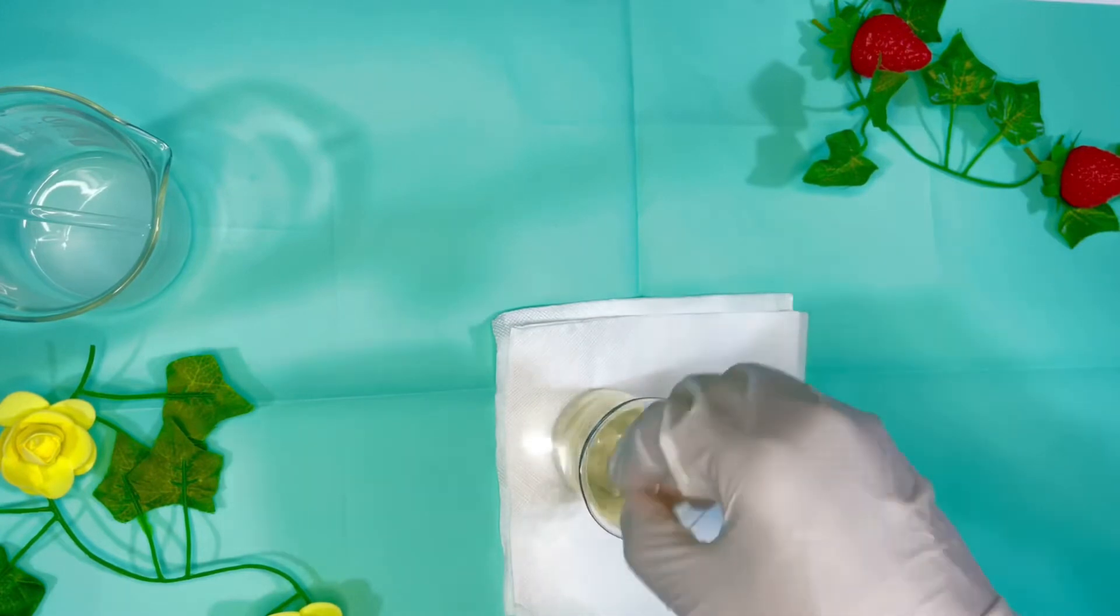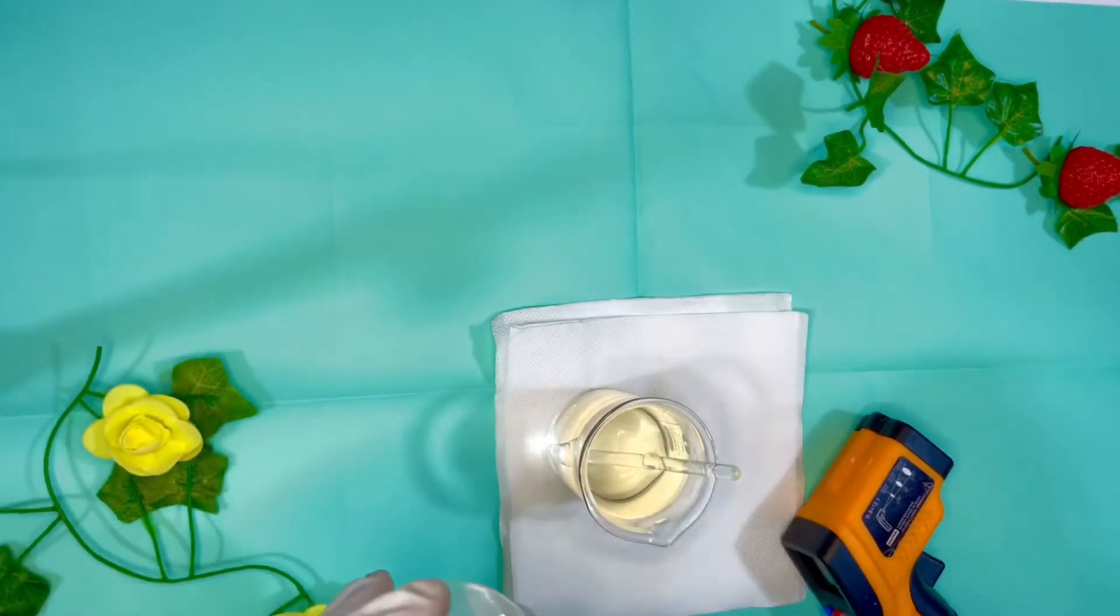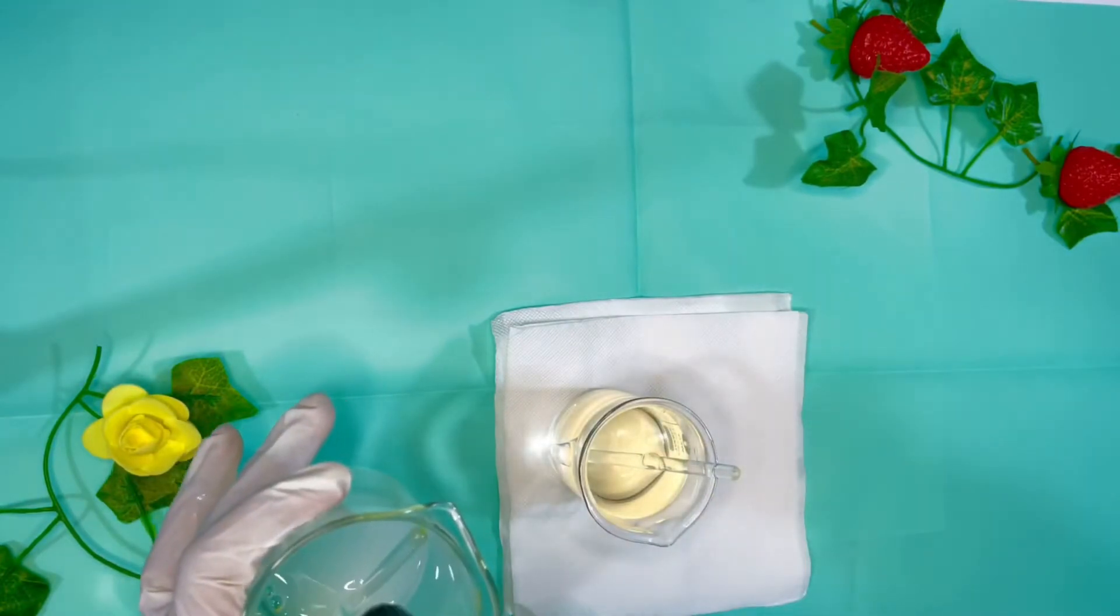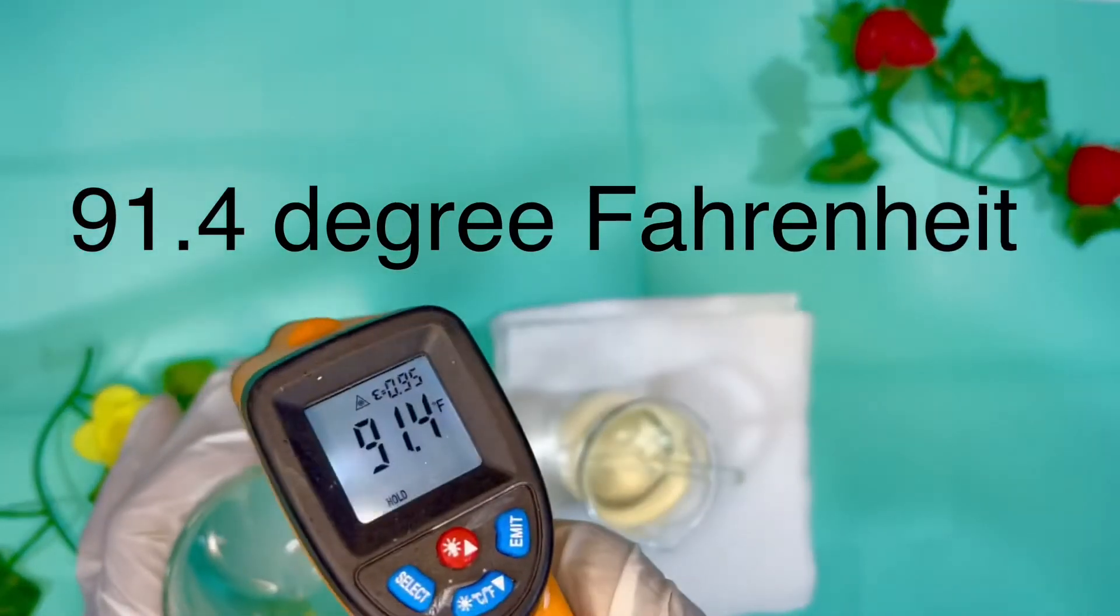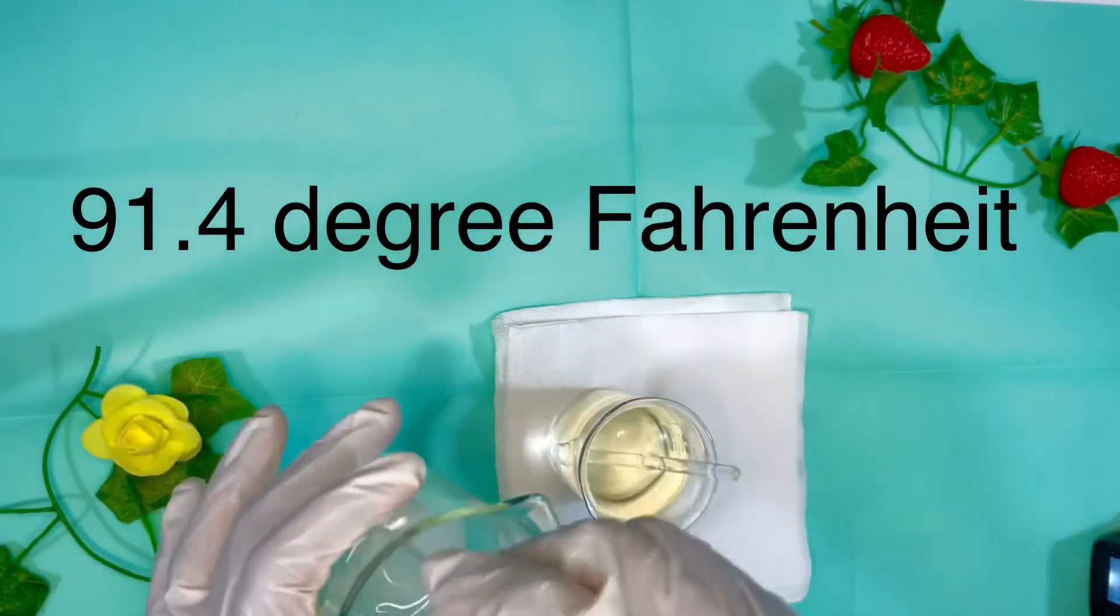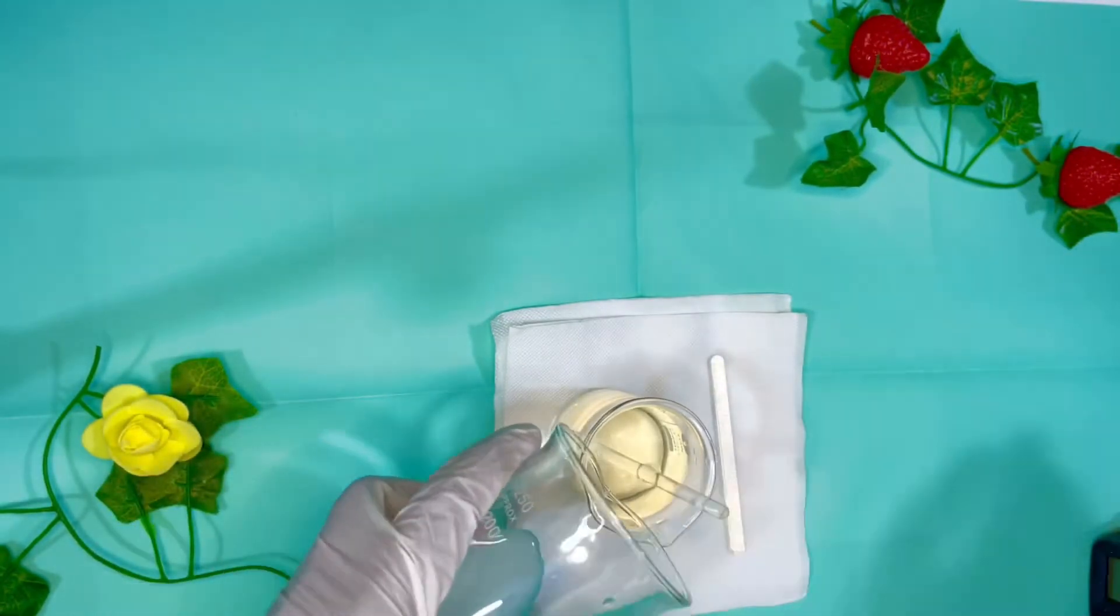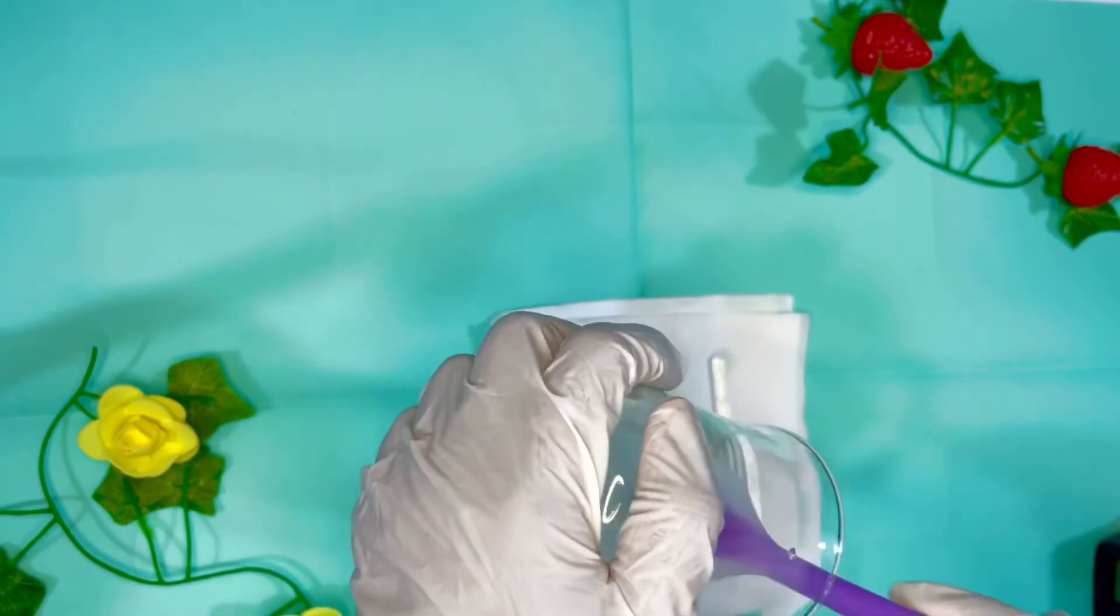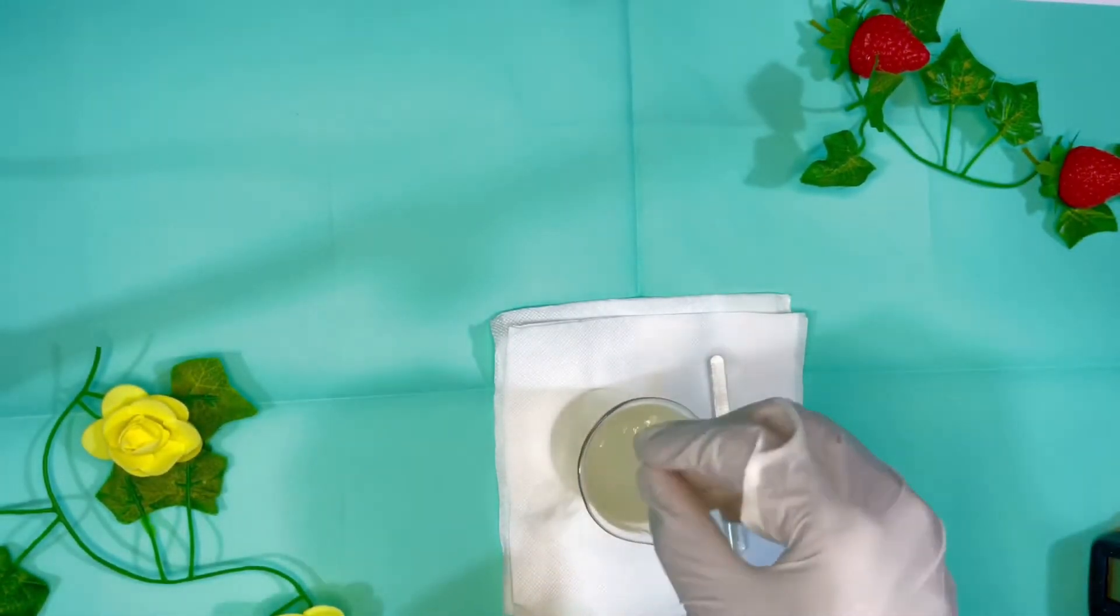And then go ahead to add my Phase A into my Phase B. So for my Phase A, I'm gonna take the temperature to see if it is below 100 degrees Fahrenheit, then I can go ahead to add it to my recipe. So it is 91.4 degrees Fahrenheit and I'm good to go. So I'm gonna add it into my Phase B.